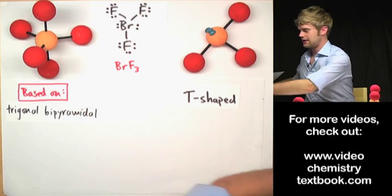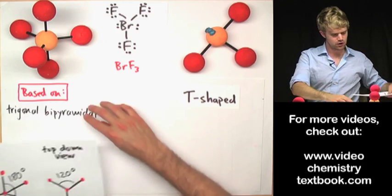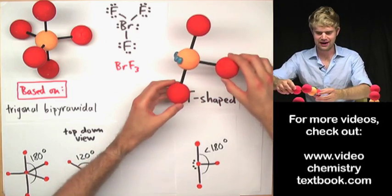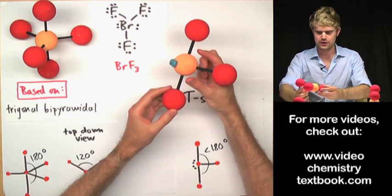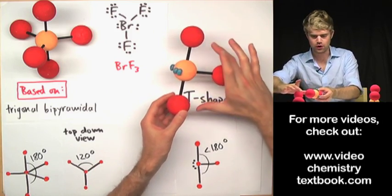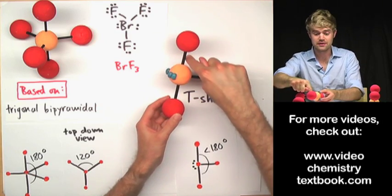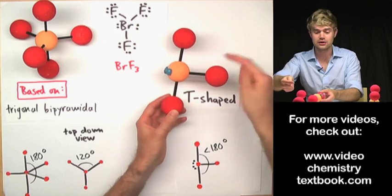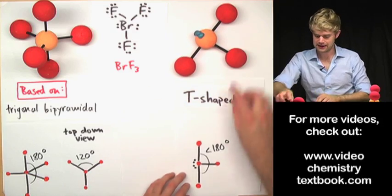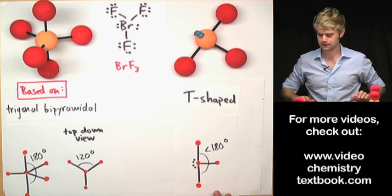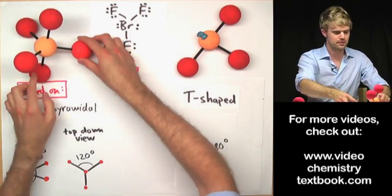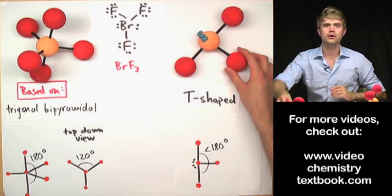In terms of angles, the T-shaped molecule has an angle less than 180 degrees between the two axial atoms because the lone electron pairs push inward on them. It also means the angle between the axial and equatorial bonds is less than 90 degrees. So both of these angles are less than their ideal values. That's what BrF3 looks like — a T-shaped molecule because two equatorial atoms from the trigonal bipyramidal base have been replaced by lone electron pairs.